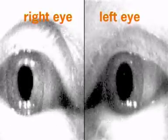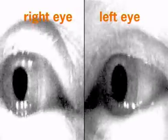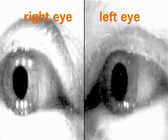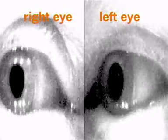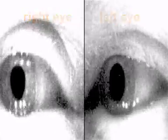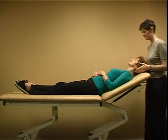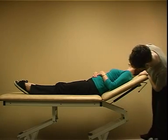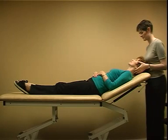Horizontal canal BPPV may be suspected if a purely horizontal nystagmus was observed during any previous positional testing. To test for this specifically, ask the patient to lie down slowly on their back with their head raised by 30 degrees. This ensures the horizontal canal remains in the plane of motion throughout the test.